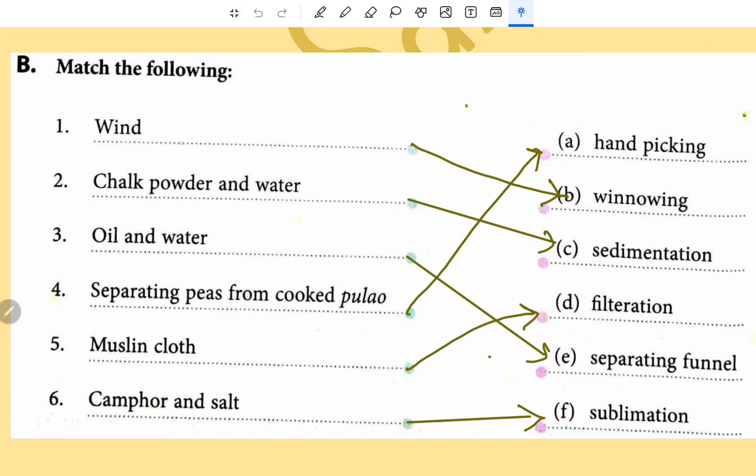This is match the following. Wind is matched with winnowing, chalk powder and water sedimentation, oil and water separating funnel, separating peas from cooked pulao that is hand picking, muslin cloth that is filtration, and camphor and salt sublimation.